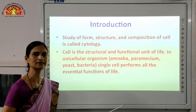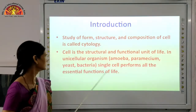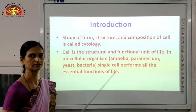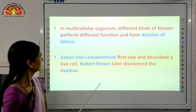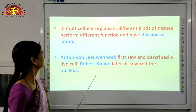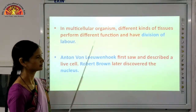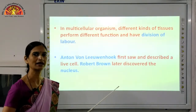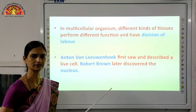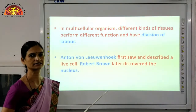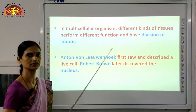In unicellular organisms, the single cell performs all the life processes — nutrition, respiration, excretion, transportation — everything is done by the single cell only. In multicellular organisms, there are different kinds of tissues, organs, and organ systems present. The work is divided among them so that every organ or organ system can perform a particular function. We call this division of labor. You can find these things in your book on page number 126.